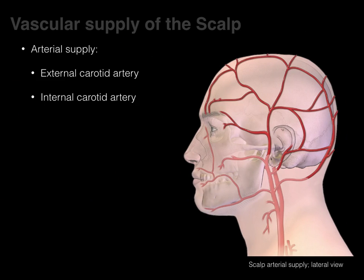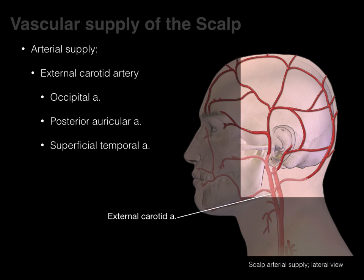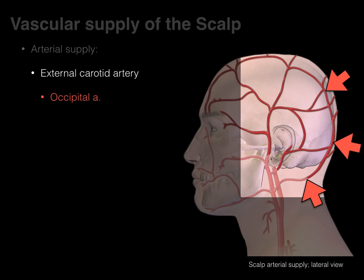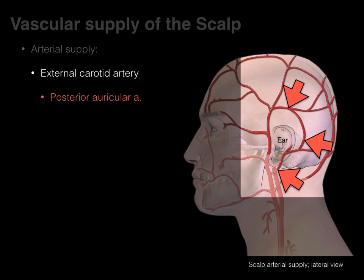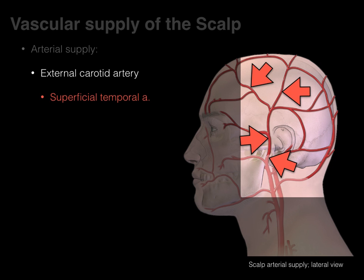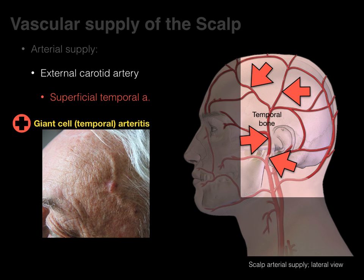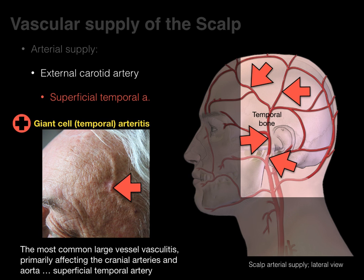The vascular supply to the scalp comes from branches of the external and internal carotid arteries. From the external carotid: the occipital, posterior auricular, and superficial temporal branches. The occipital arteries overlie the occipital bone; the posterior auricular arteries are behind the ear; and the superficial temporal artery overlies the temporal bone. The superficial temporal artery is particularly important in the rheumatological condition called giant cell arteritis, or temporal arteritis — the most common large-vessel vasculitis, primarily affecting the cranial arteries and aorta. The superficial temporal artery is the most direct vessel for biopsy to confirm vasculitis.